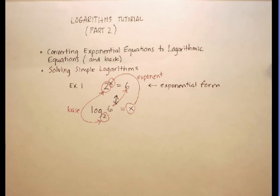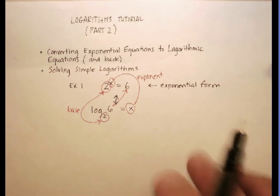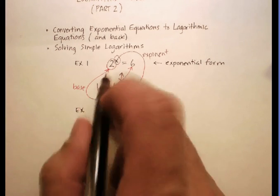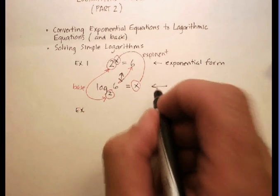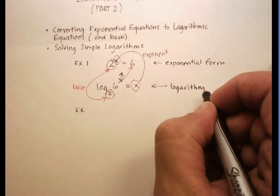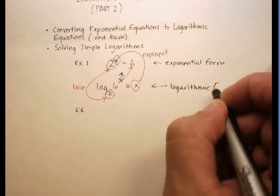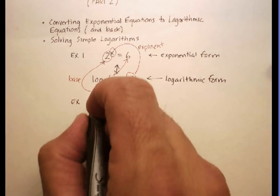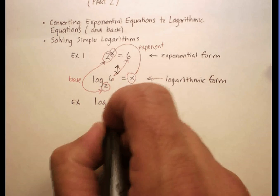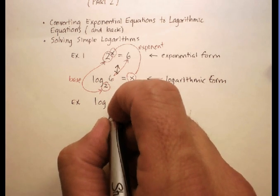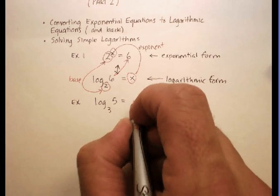Okay, so as an example, let's try something different. Let's say I gave you, instead of the exponential form, changing it to the logarithmic form. Let me give you a logarithm form. Let's say log base 3 of, I don't know, let's say 5 is equal to x.